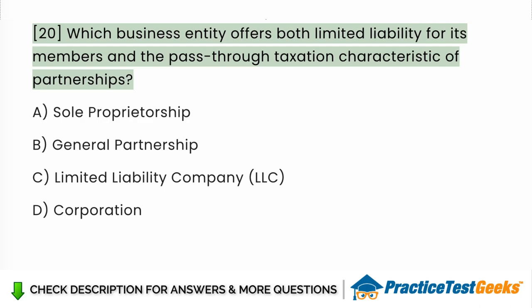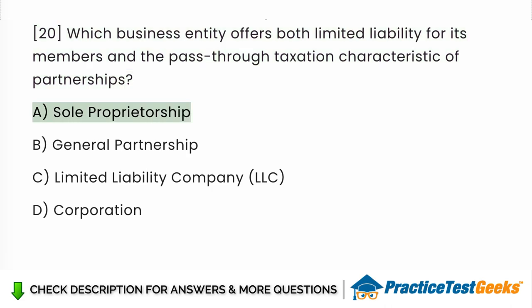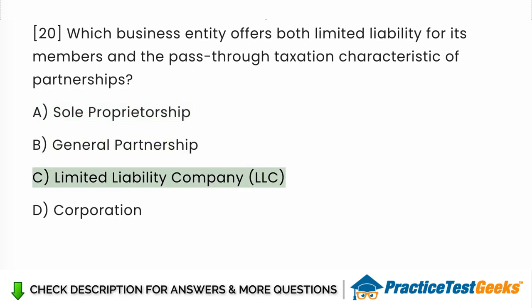Which business entity offers both limited liability for its members and the pass-through taxation characteristic of partnerships? a. Sole proprietorship. b. General partnership. c. Limited liability company. d. Corporation.